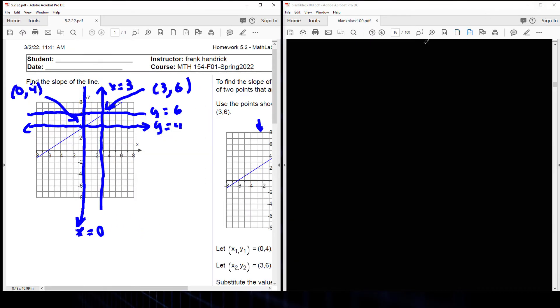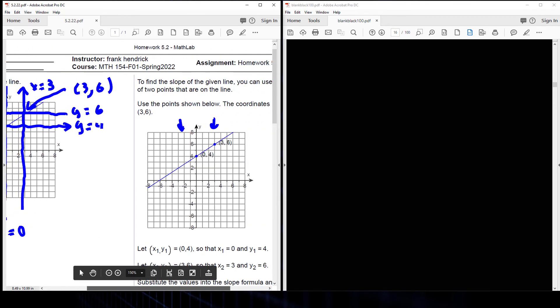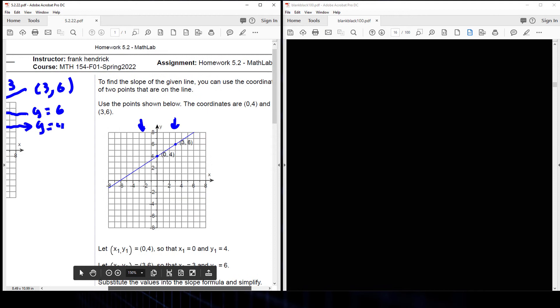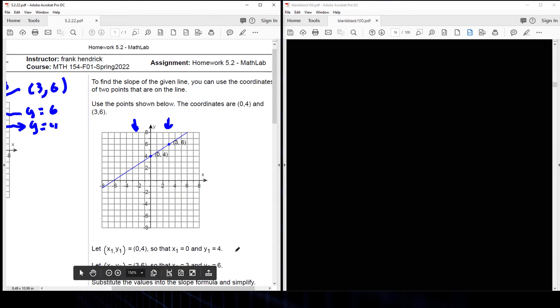So now that we have our ordered pairs, and they want us to find the slope of the line, the first thing I do is write out my pairs that I'm looking at. 0, 4 and 3, 6. So I have my ordered pairs. I write out my formula that I'm going to need.